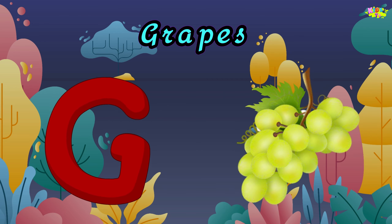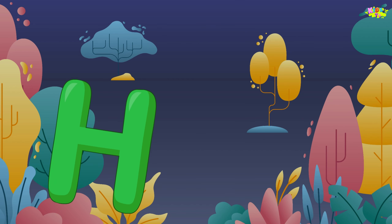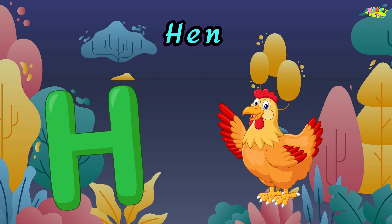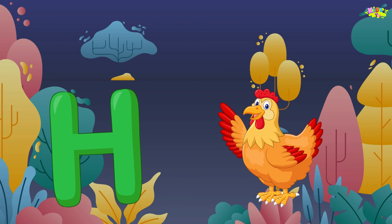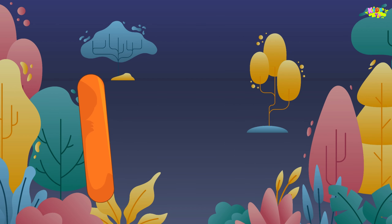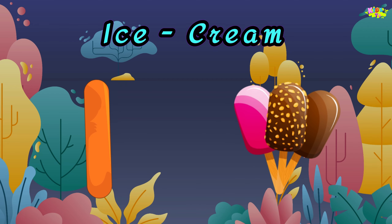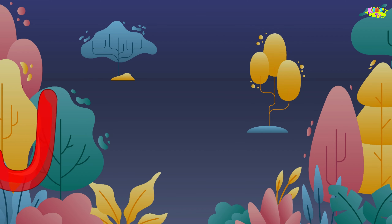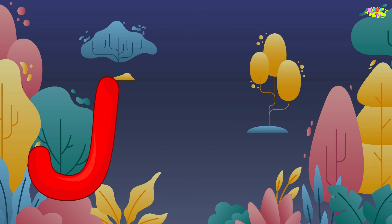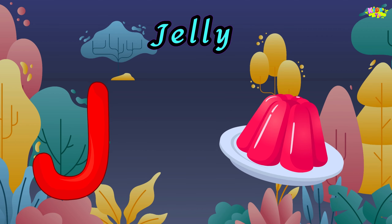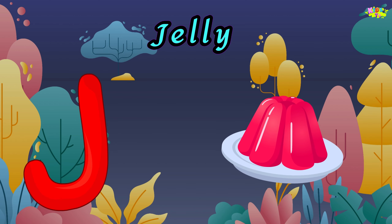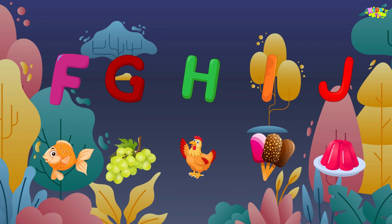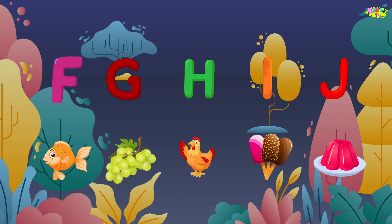G is for grapes. Grapes, grapes. G, grapes. H is for hen. He, hen. He, hen. H, hen. I is for ice cream. He, ice cream. He, ice cream. I, ice cream. J is for jelly. J, jelly. J, jelly. J, jelly.